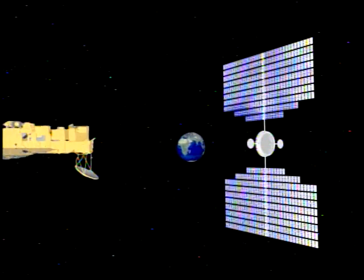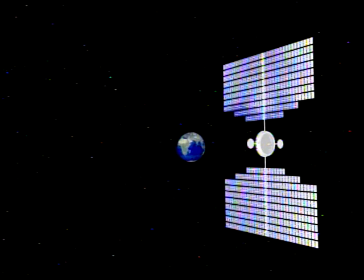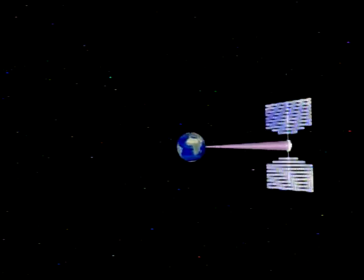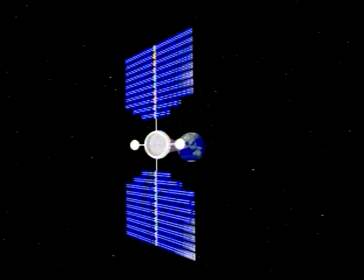The phased array transmitter is about one kilometer in diameter. The Terra spacecraft is shown for comparison. The transmitter antenna continuously beams 1.2 gigawatts of microwave power to the receiving antenna on the ground.